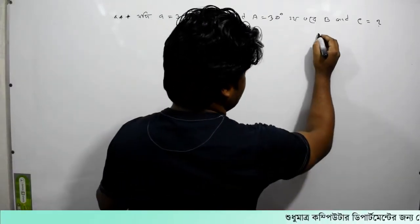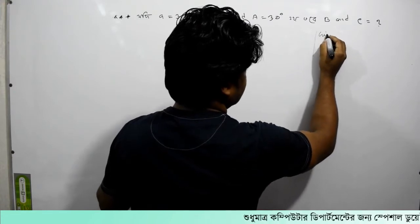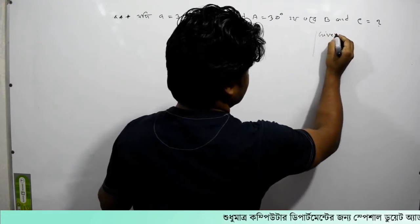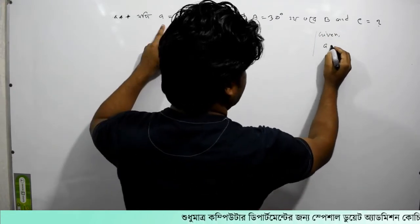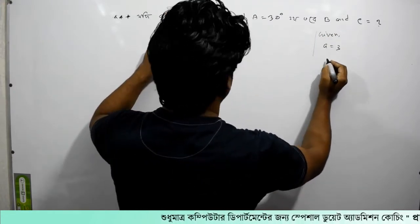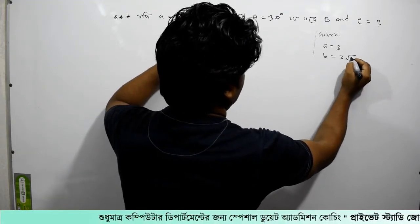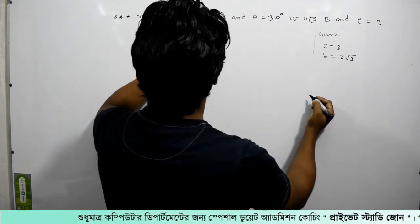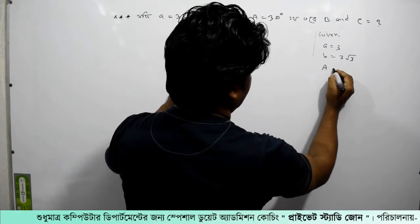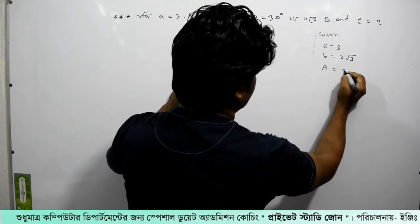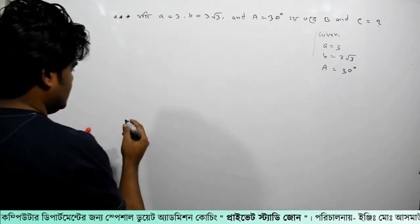Here we are going to write: given a equal to 2, a equal to 3, b equal to 2 root over 3, and capital A equal to 23 degrees.